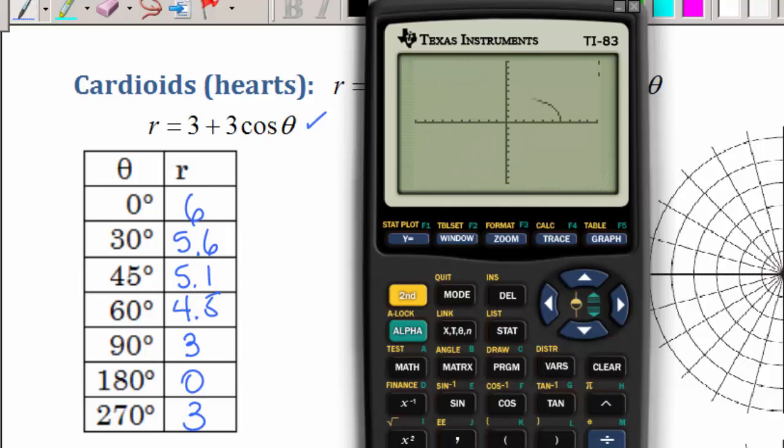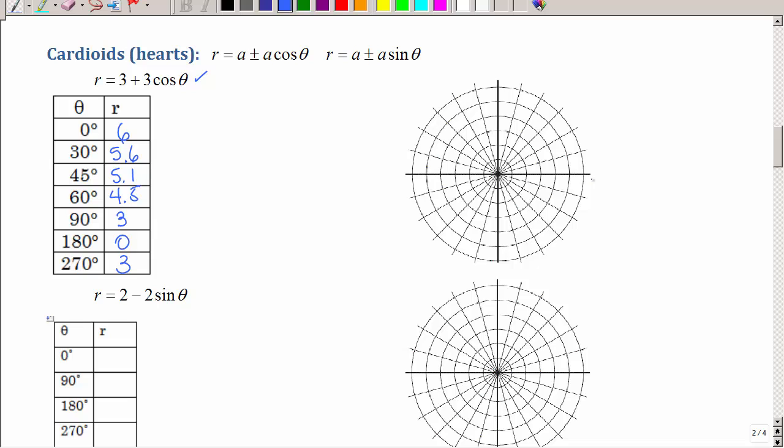Then, if I wanted to see the graph, it is a sideways cardioid. So what do I want my paper to look like? Well, so here's 0, 1, 2, 3, 4, 5, 6. I'm going to plot that point.